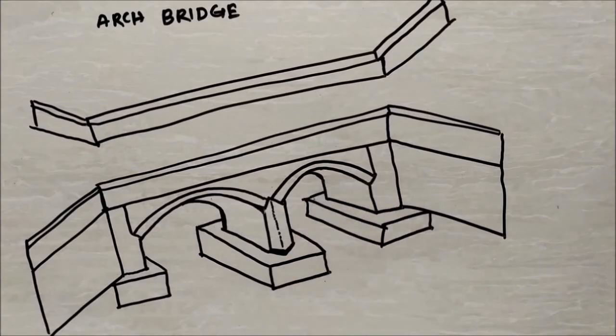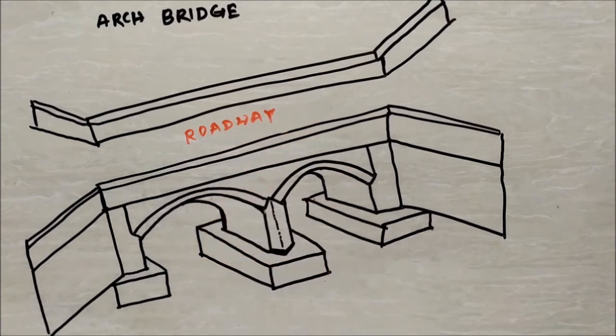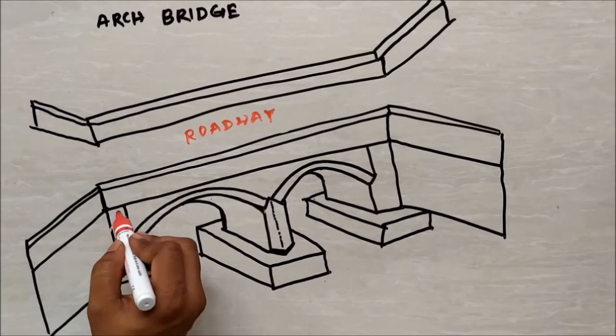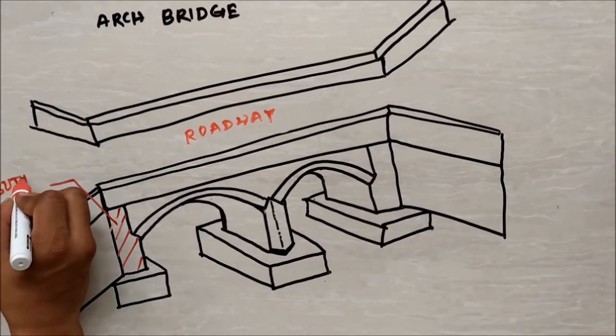It is a simple model of an arch bridge, and this is the roadway provided for vehicle movement as well as pedestrian movement. This part is called abutment. Abutment is a substructure component which supports the end of a superstructure of bridge.